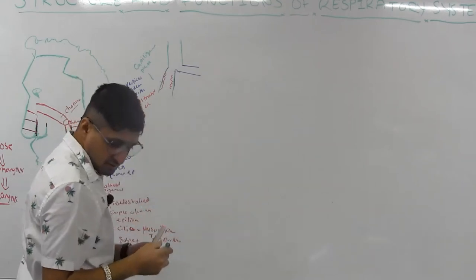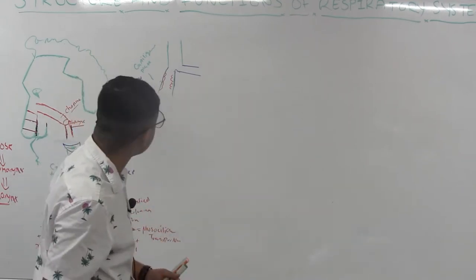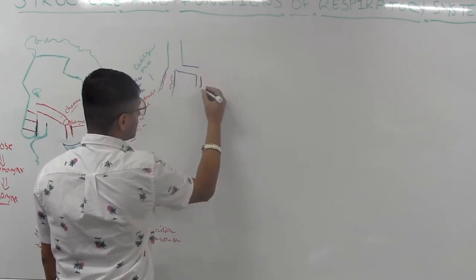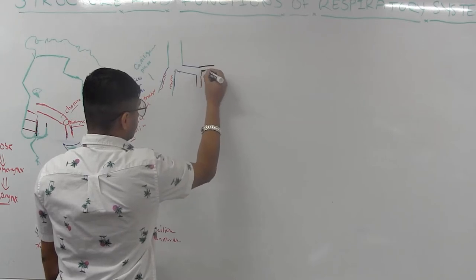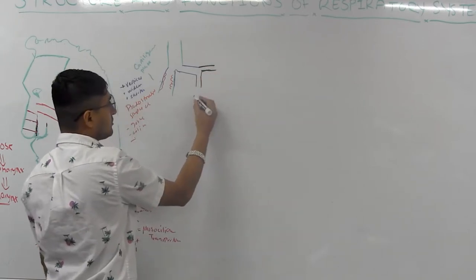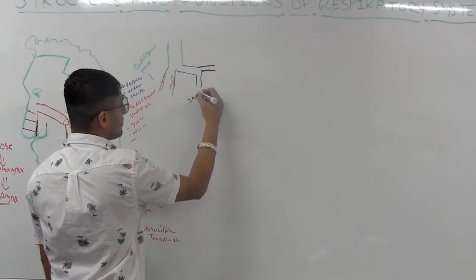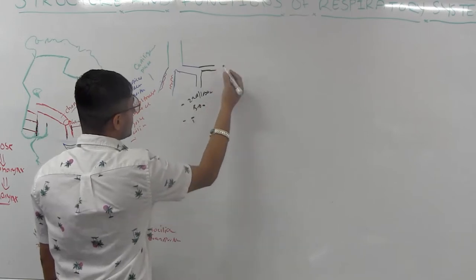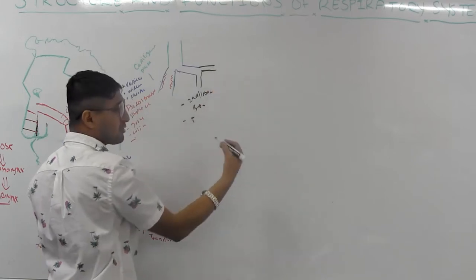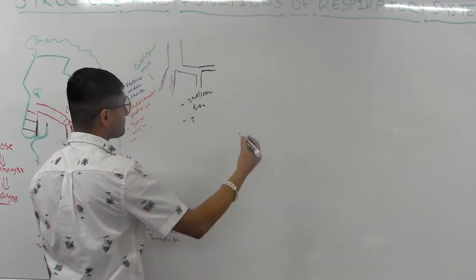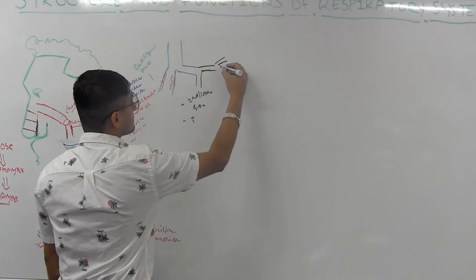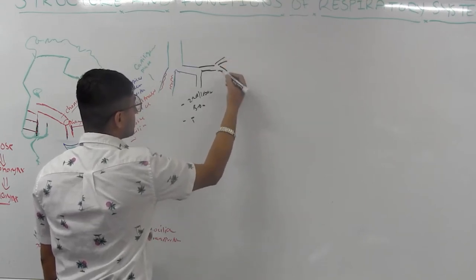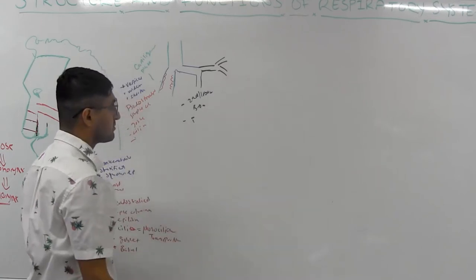The primary bronchi then split into secondary bronchi, and then those split into tertiary bronchi. On the left side, you get about eight tertiary bronchi or so. The tree keeps splitting down.